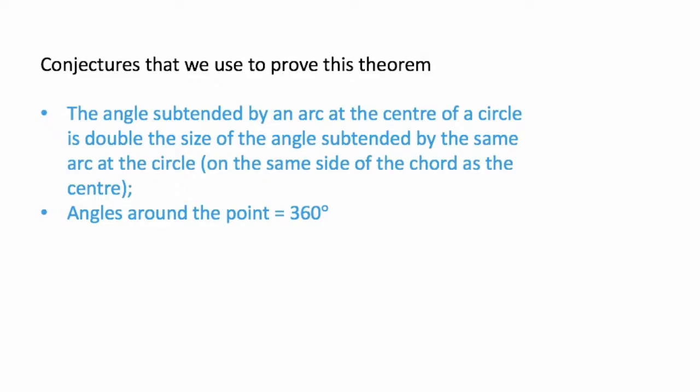As with all the other theorems, you need to know which conjectures you are going to use to prove that particular theorem. For this theorem you are going to use the theorem that states that the angle subtended by the arc at the center of the circle is double the size of the angle subtended by the same arc at the circle on the same side of the chord as the center. Now this theorem is one that you normally use and we say angle at the center is twice the angle at the circumference. That's what you're going to use to prove this theorem.